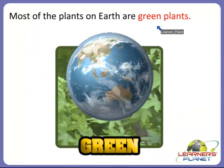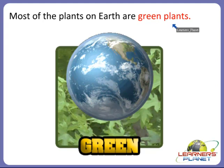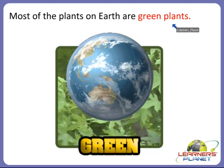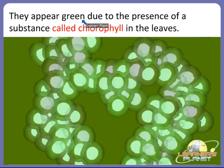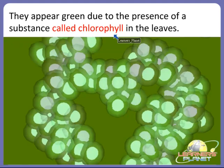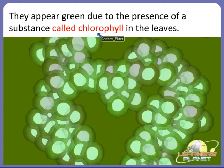Most of the plants on earth are green plants. You must have seen around you that all the plants are mostly green in color. So why are they green in color? The green plants appear green in color due to the presence of a substance called chlorophyll in the leaves. Chlorophyll is a substance which is present in the leaves of the plants, and because of this substance, the green plants appear green in color.